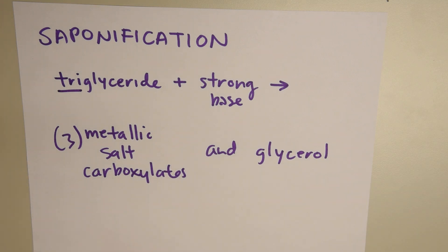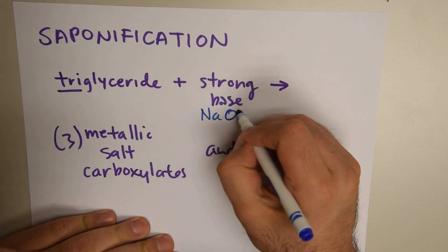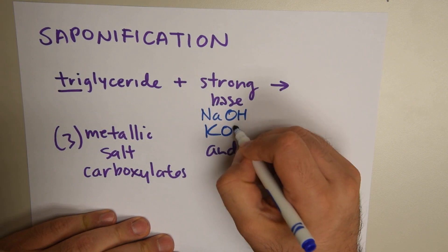What are some examples of strong bases that we use to create soap? We have sodium hydroxide and we have potassium hydroxide.